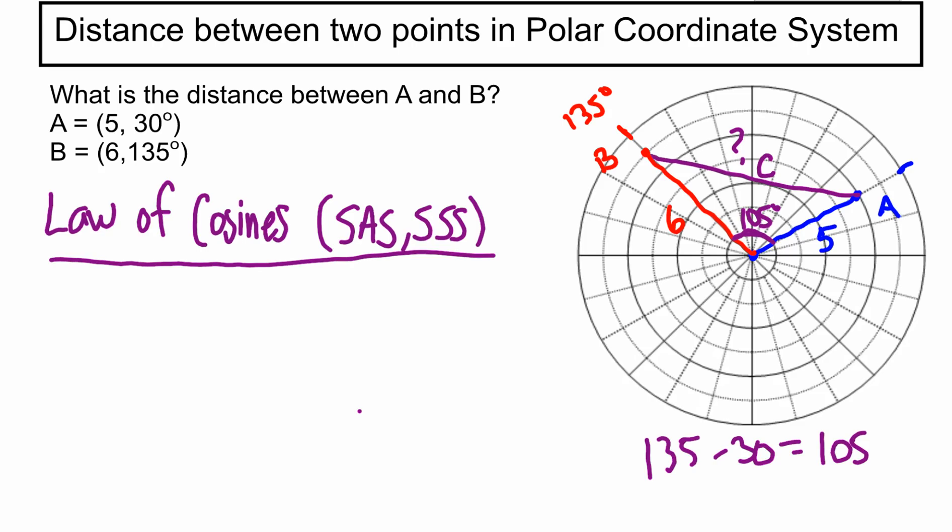And in this one, we have two sides. We've got 6 and 5, and then the angle in between them is 105 degrees. So this would be considered a side-angle-side situation.